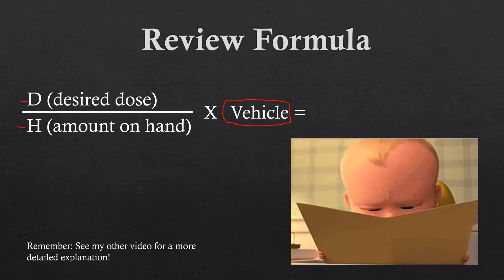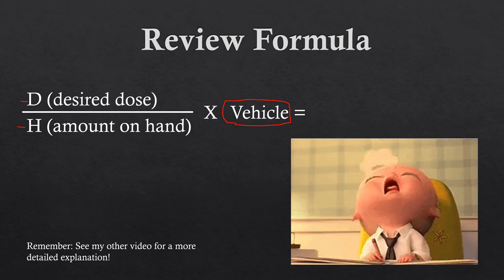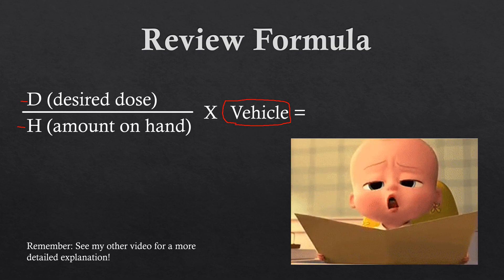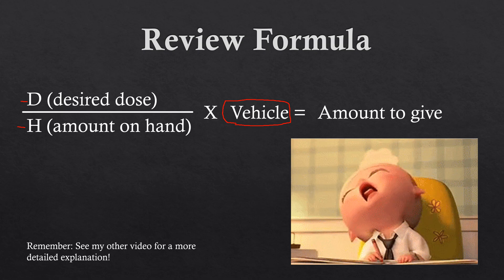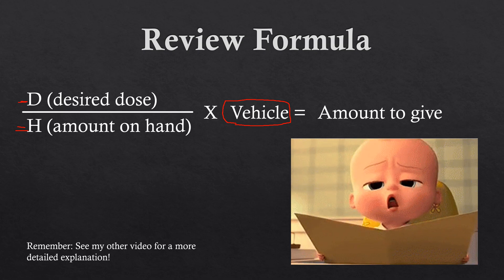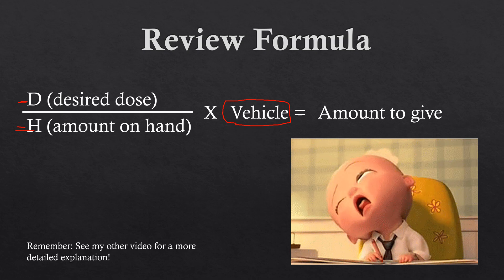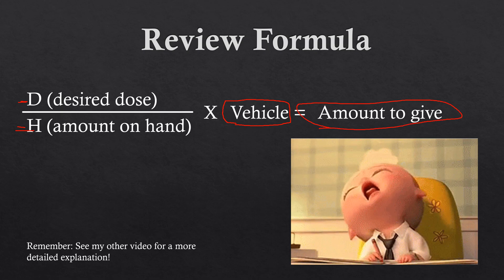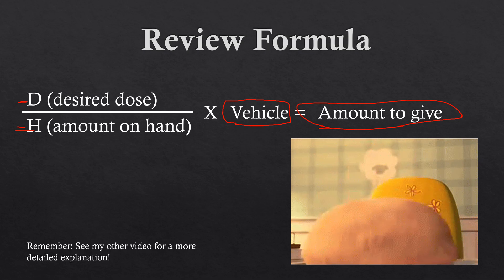After reviewing comments on the last practice question video, the vehicle is what we're going to focus on a lot in this video, because that's where most people go wrong. Essentially, you divide the desired dose by the amount you have on hand, multiply by the vehicle, and that gives you the amount to give. Let's try some practice questions.